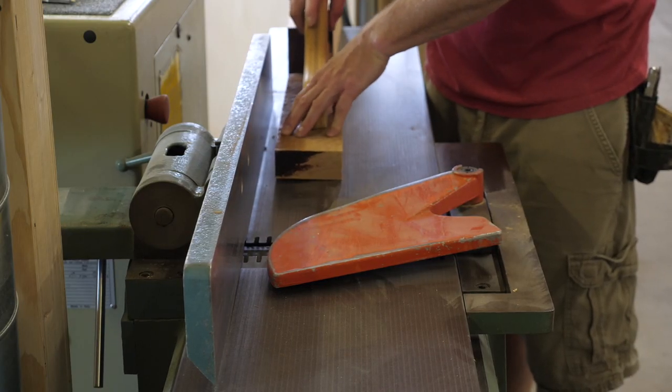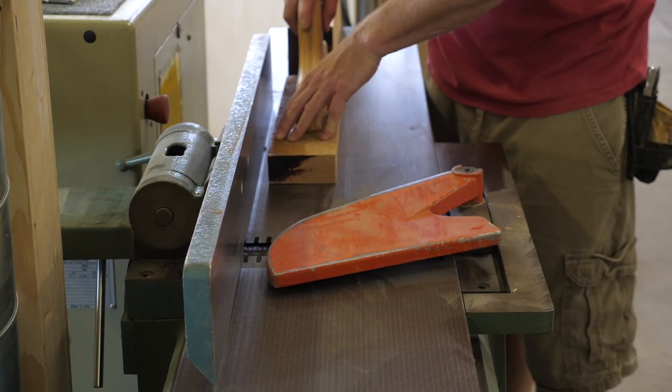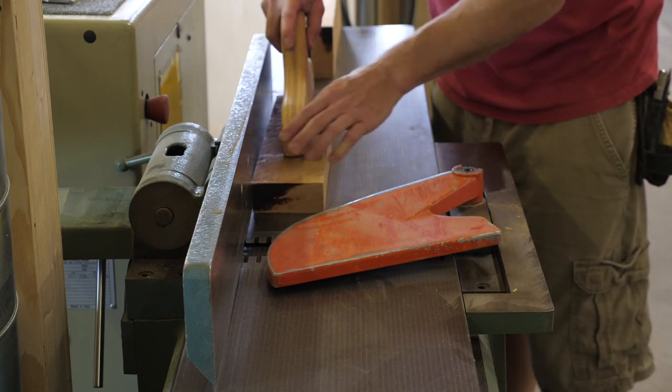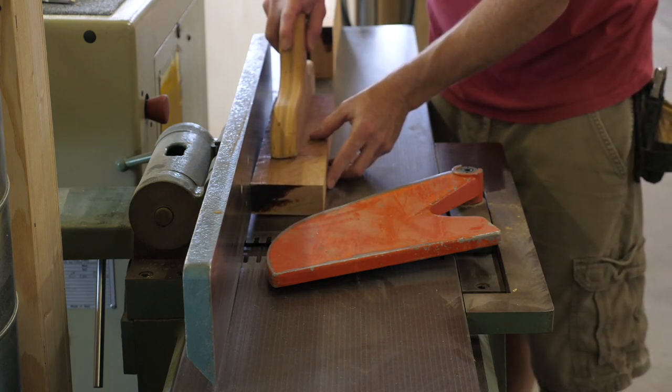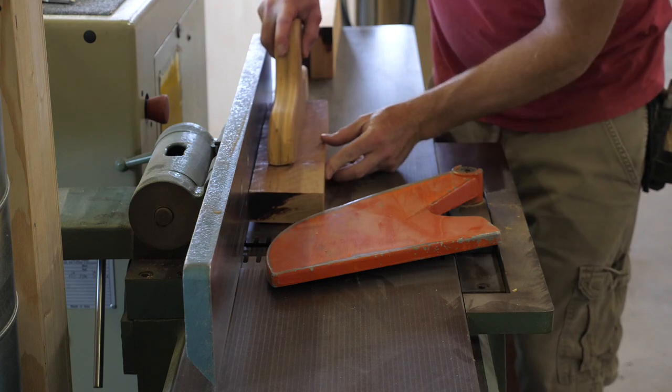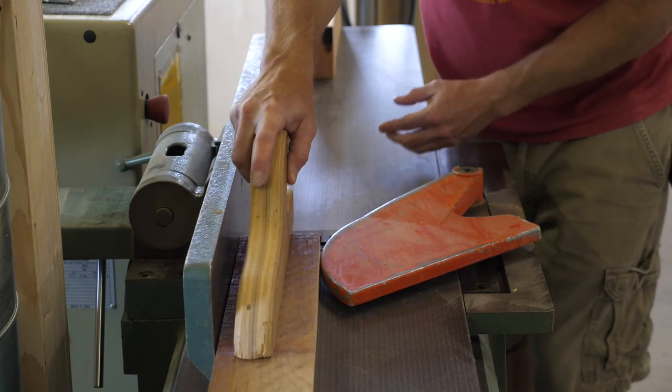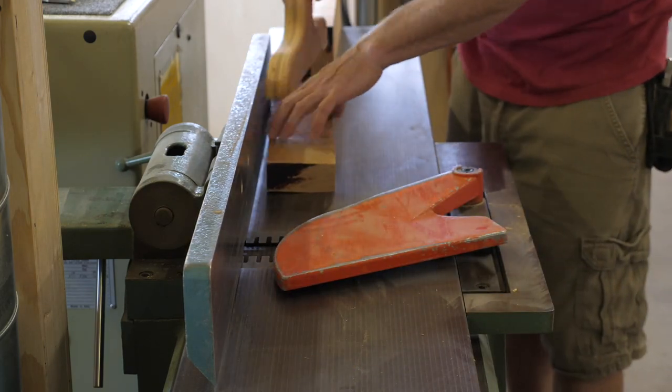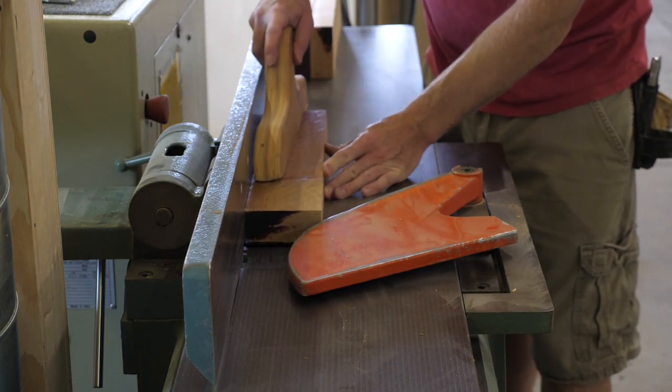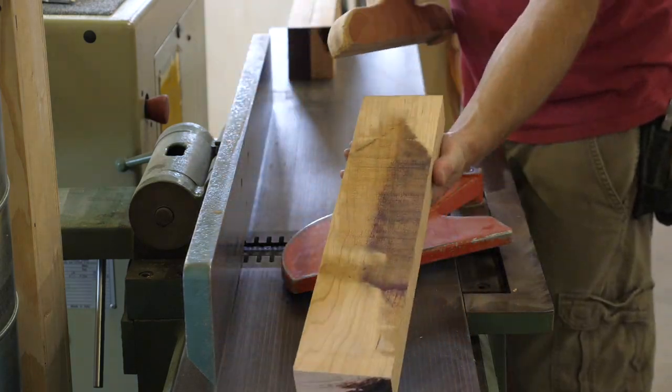After roughing parts to size at the bandsaw, I head to the jointer to flatten a face and square one edge. When flattening a piece that rocks back and forth, I try to find the middle point and take a pass. It's totally fine to rock it to one side or the other, but more wood will need to be removed to get that first flat face.